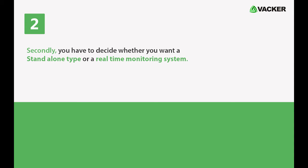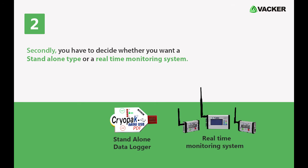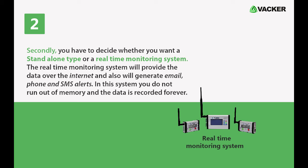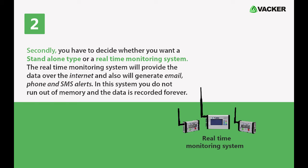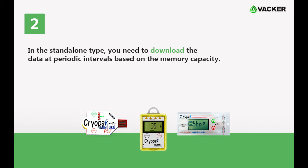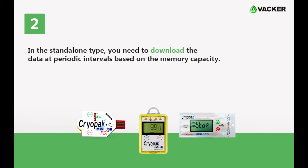Secondly, you have to decide whether you want a standalone type or a real-time monitoring system. The real-time monitoring system will provide the data over the internet and also will generate email, phone, and SMS alerts. In this system you do not run out of memory and the data is recorded forever. In the standalone type, you need to download the data at periodic intervals based on the memory capacity.